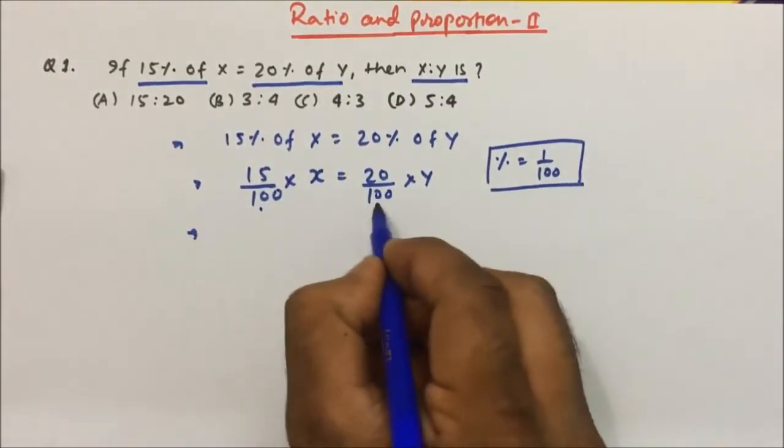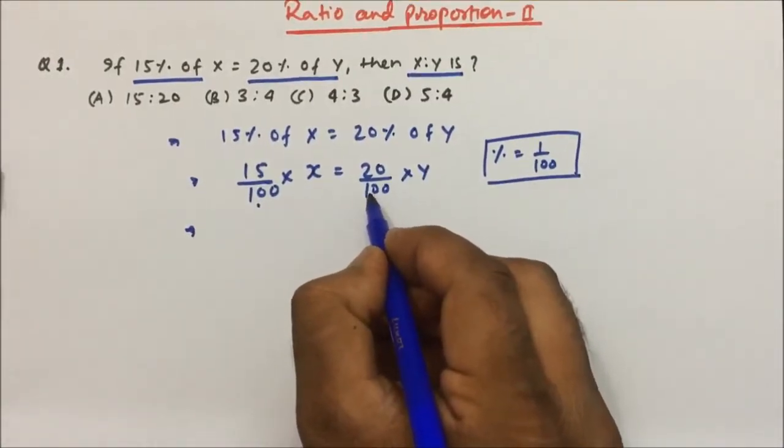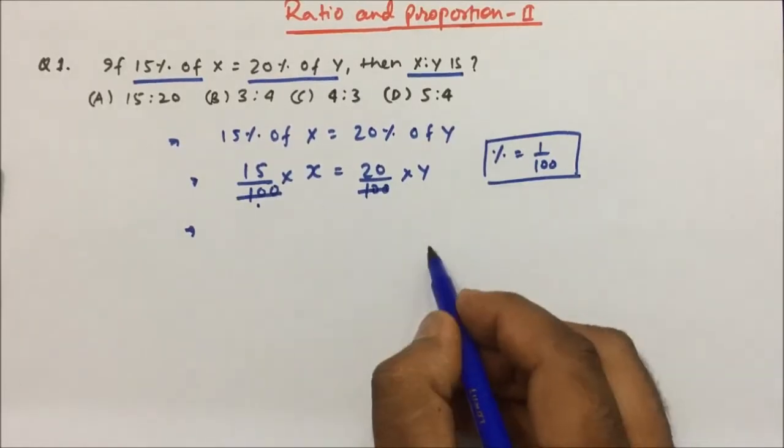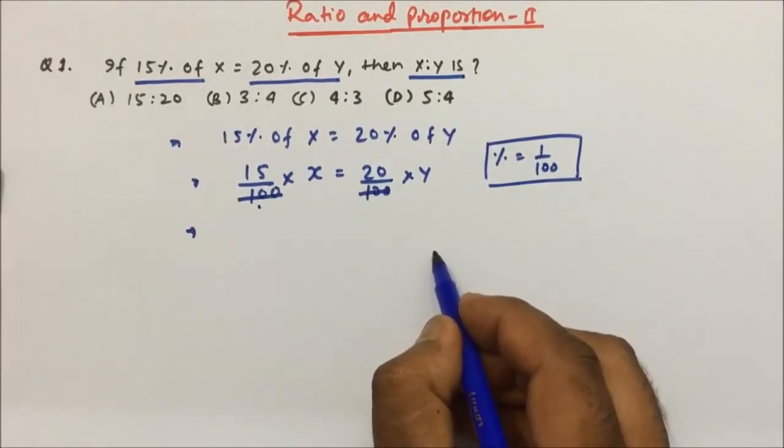Now see, left side also you have 100, right side also you have 100. So 100 will get cancelled with 100.